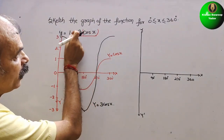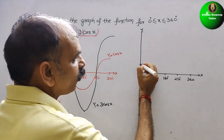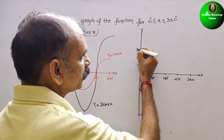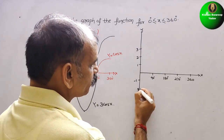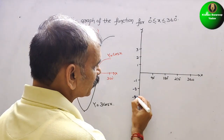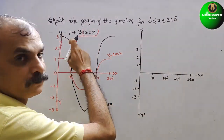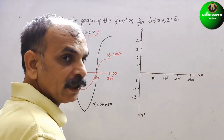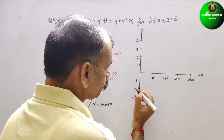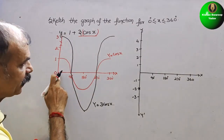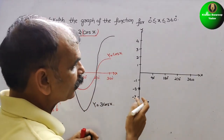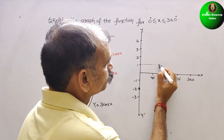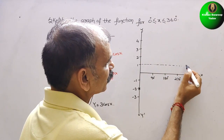After adding 1, we mark: 1, 2, 3 on the positive side, and -1, -2, -3 on the negative side. So 3 + 1 = 4, it comes here, and -3 + 1 = -2, it comes here. The baseline shifts from 0 to 1.